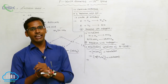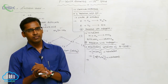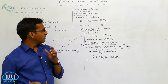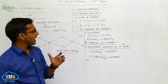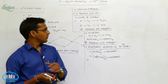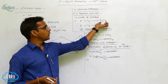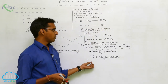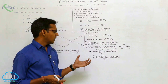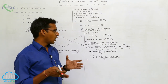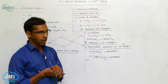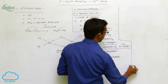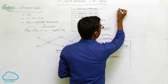Boron has low electrical conductivity and acts as a Lewis acid. When it reacts with oxygen, it forms B2O3 and borate compounds. These are the anomalous behaviors of boron in the 13th group.